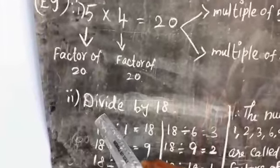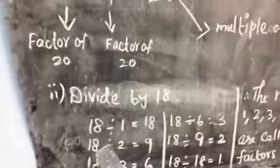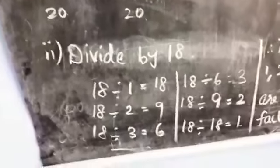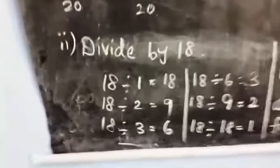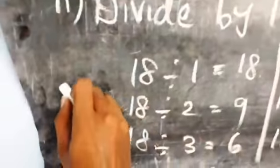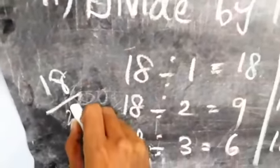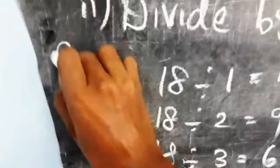Look at the second example: dividing 18. 18 divided by 1 is equal to 18. 18 divided by 2 is equal to 9. We can divide 18 by 2: 1 two is 2, 9 twos are 18. The answer is 9.